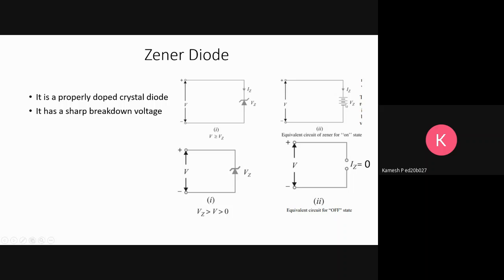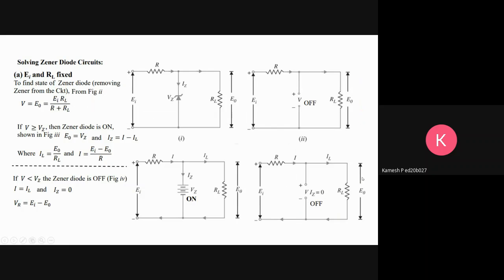Zero current passes through the Zener diode when voltage conditions aren't met. Solving for different cases, let's say when Ei is fixed and RL is fixed.